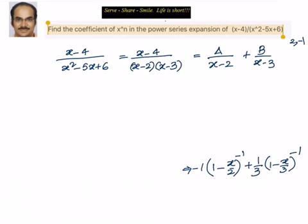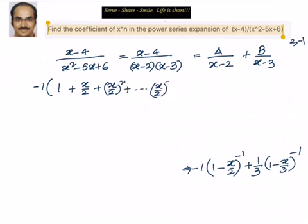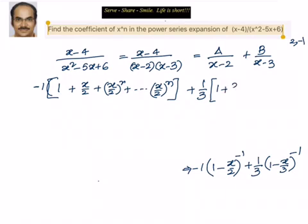Now let's expand them. We know the formula for 1 minus x to the power of minus 1. So we write: minus 1 into 1 plus x by 2 plus x by 2 whole square, and so on up to x by 2 whole to the power of n. Plus 1 by 3 into 1 plus x by 3 plus x by 3 whole square, and the last term is x by 3 whole to the power of n.